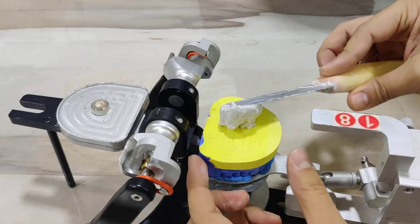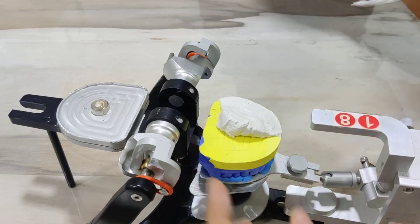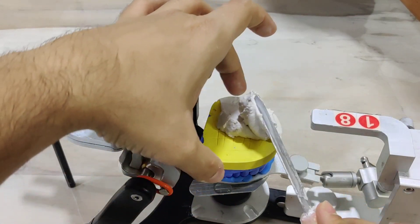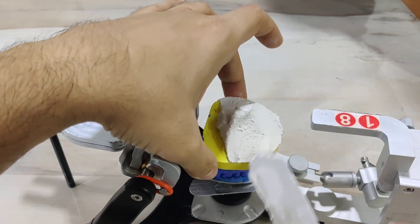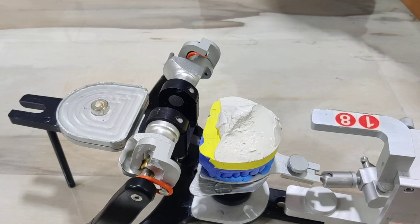We're supposed to seat this first onto the cast and adapt it onto all the margins, making sure that you do not leave any void in the center or towards the periphery.